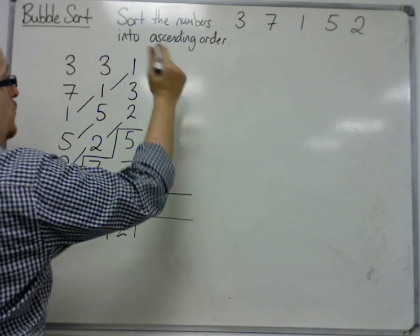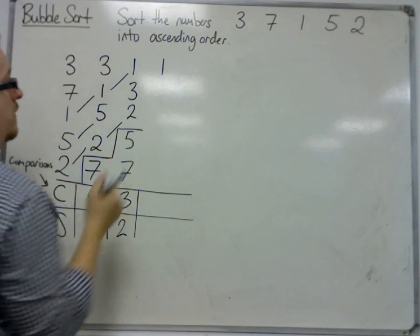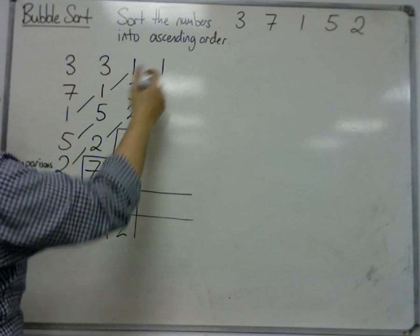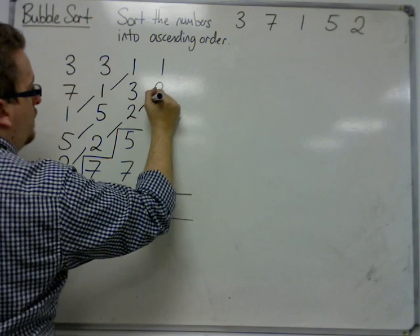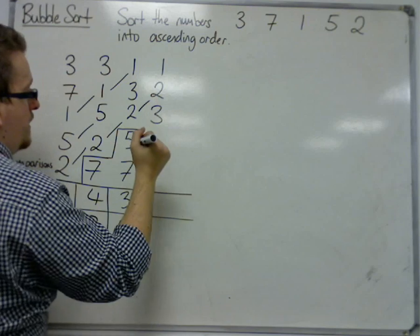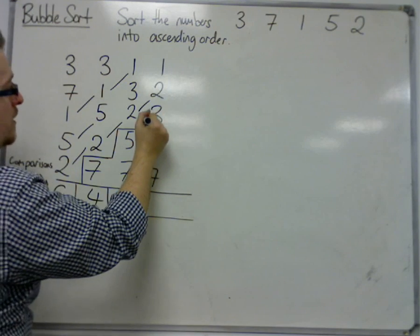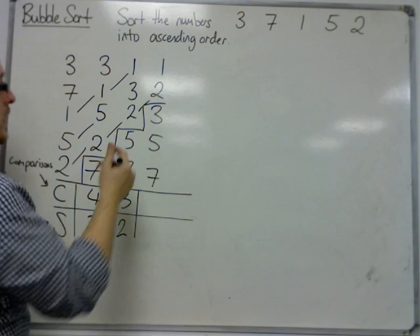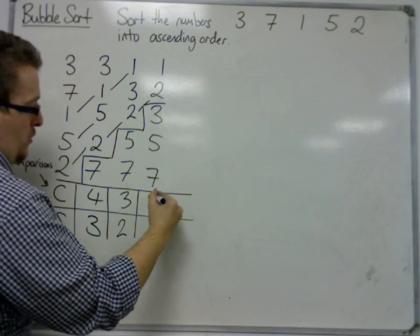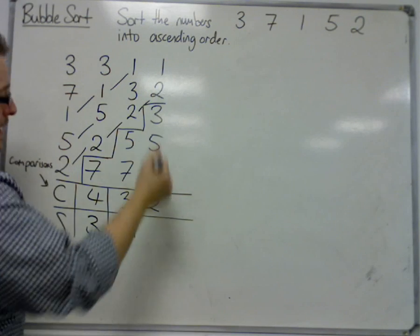Now we're looking at 1 and 3. So 1 is the smaller of the 2. 3 and 2, they're in the wrong order, so a swap needs to be made. And then 3. So the largest number of the 3 has dropped to the bottom, so we can box it off. There were 3 numbers, so we made 2 comparisons. And we made 1 swap.